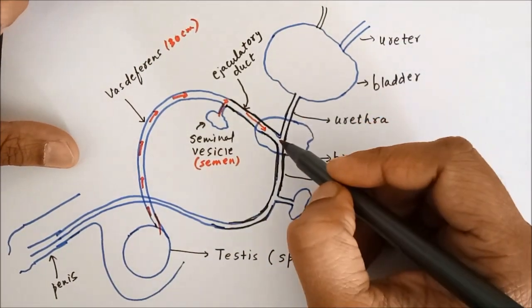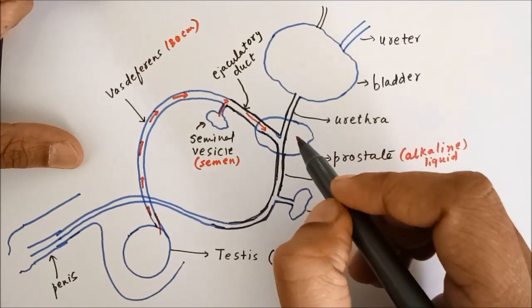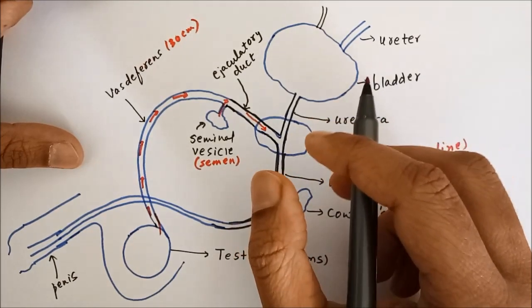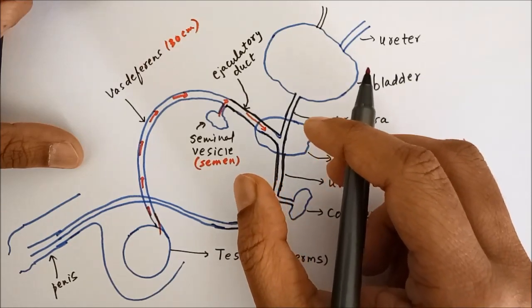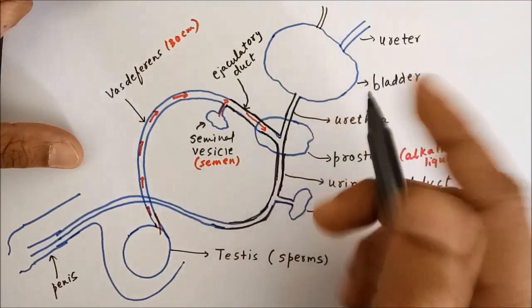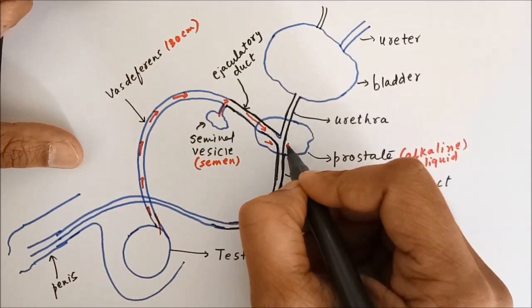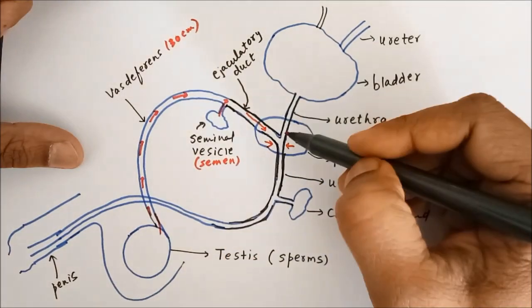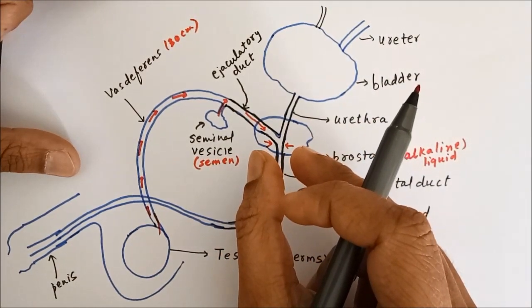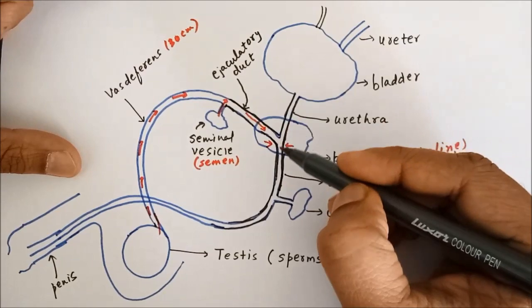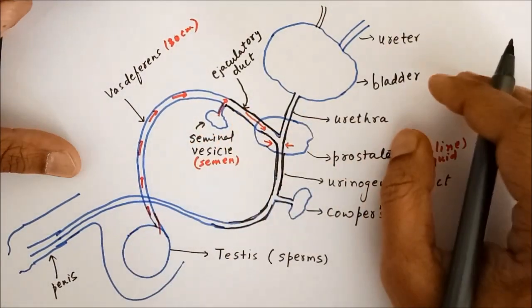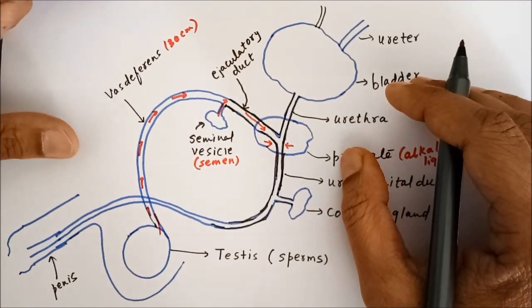Now this prostate gland actually increases in size as we grow old, and in old people this prostate swells up and compresses the urethra. So the urethra gets compressed and the urine flow is obstructed. This is a common problem in males once we get old.